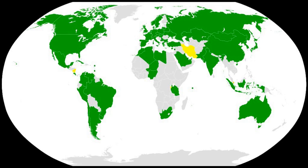The Convention on Registration of Objects Launched into Outer Space, commonly known as the Registration Convention, was adopted by the United Nations General Assembly in 1974 and went into force in 1976. As of December 2018, it has been ratified by 69 states. The convention requires states to furnish the United Nations with details about the orbit of each space object.